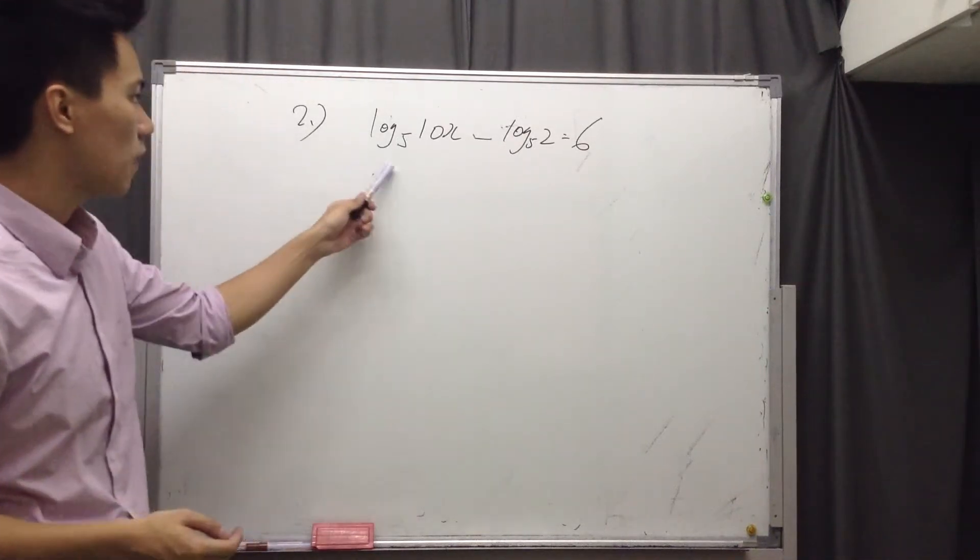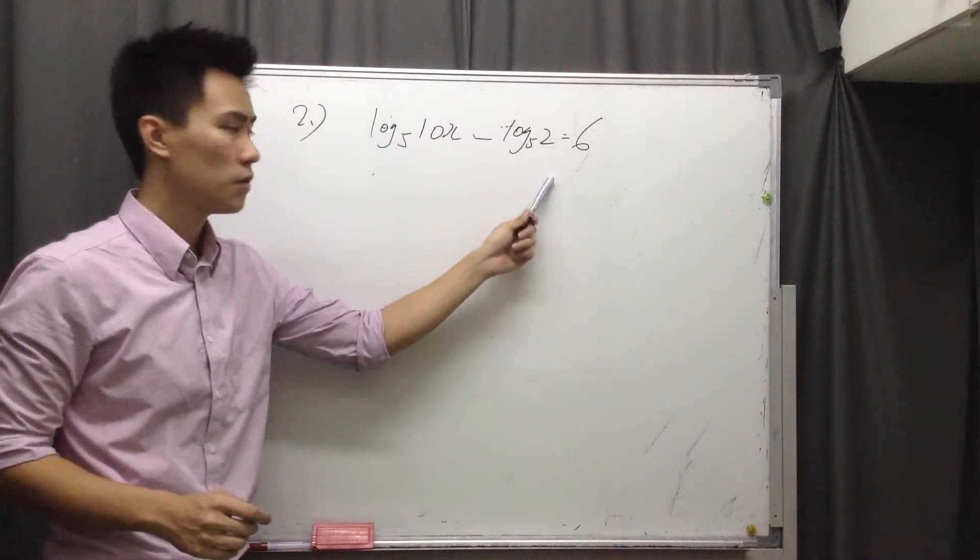Okay, question 2: log 5, 10x minus log 5, 2 equals 6.